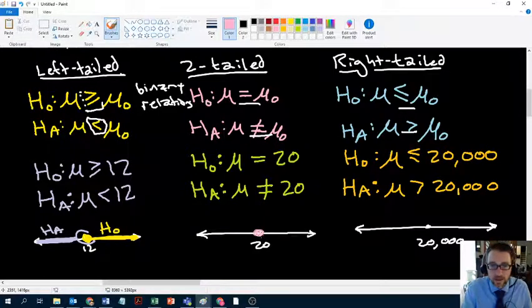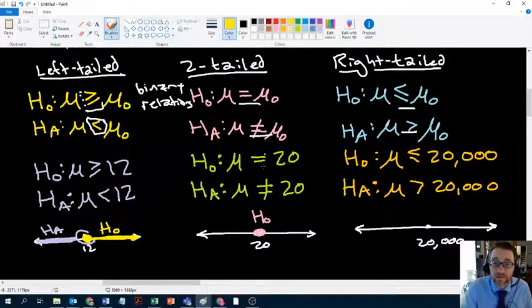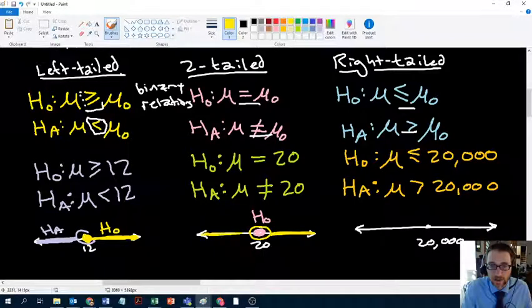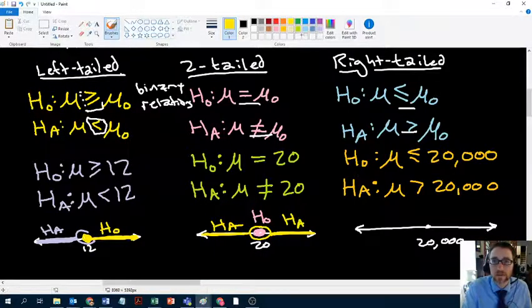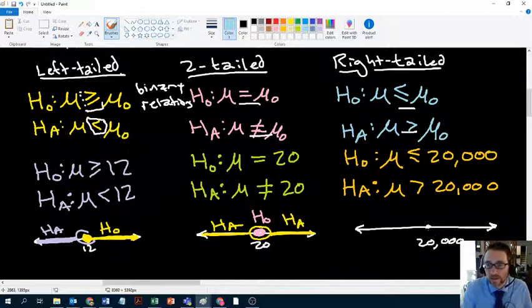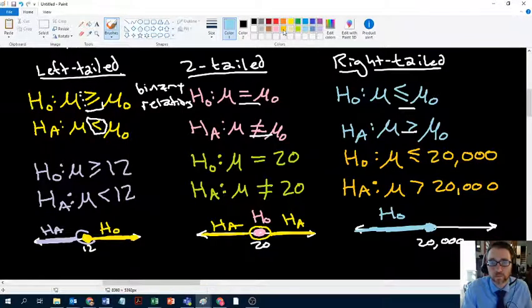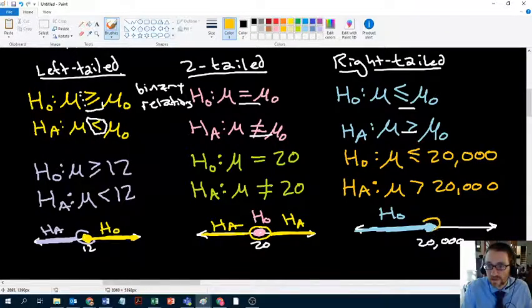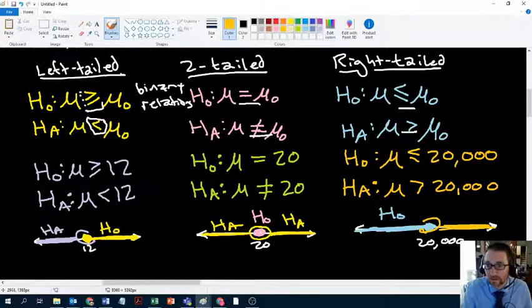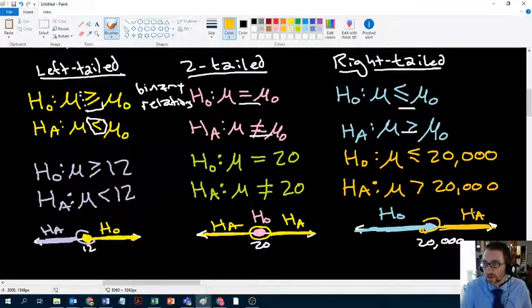In a two tailed test, right, the null says the specified value is correct. And if that's wrong, right, any other value of mu is covered by the alternative. So anything over here, anything over here, two tailed test. Finally, if we look at a right tailed test, the right tailed test says the specified value and anything beneath it to the left. Well, that's correct. That's what the null is asserting. And then the alternative says, well, not that value, but anything above that value, that all falls under the alternative.